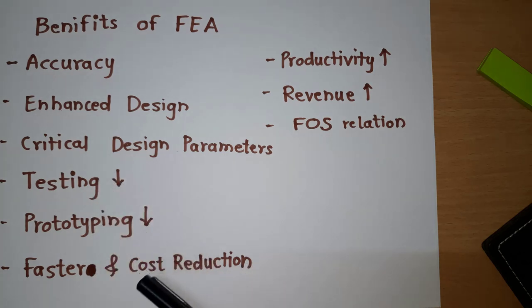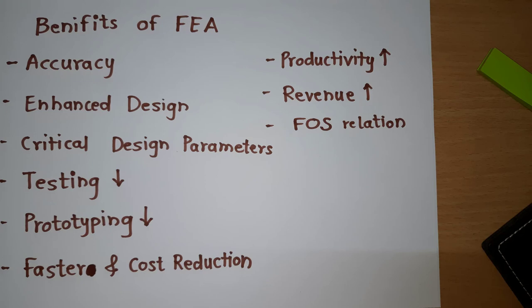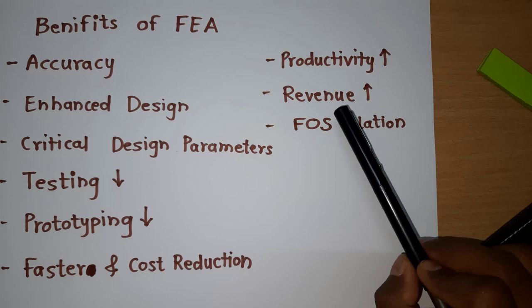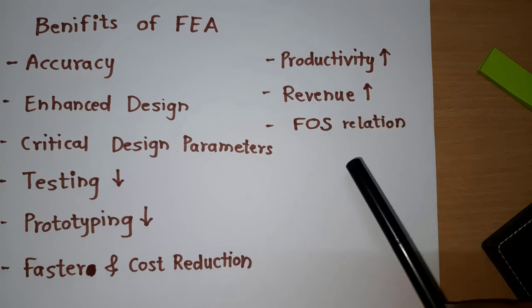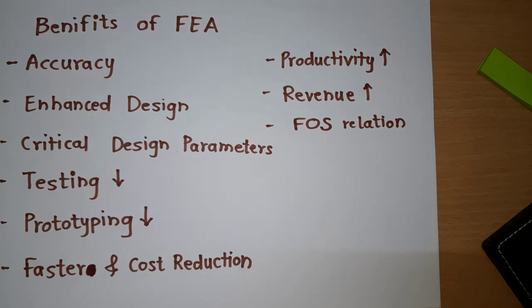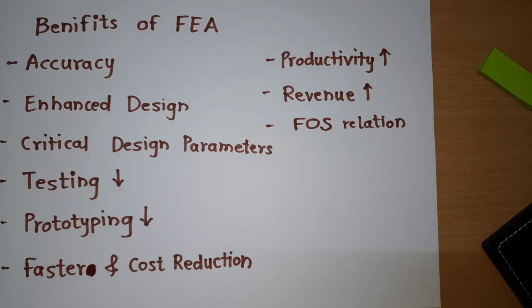So from these three, four parameters, we can see there will be improvement in the productivity of our system or of our work. Then obviously this will help the company to generate more revenue. And companies are always looking for increasing the revenue and FOS relation. FOS means factor of safety. Most of the designs we want to design based on the factor of safety, like I want to keep the factor of safety as three. So I want to use the material up to which the structure or the design should be safe for three factor of safety. That can be possible using this FEA. We can add the material, we can reduce the material so as to meet our FOS relations. So these are the benefits of FEA.